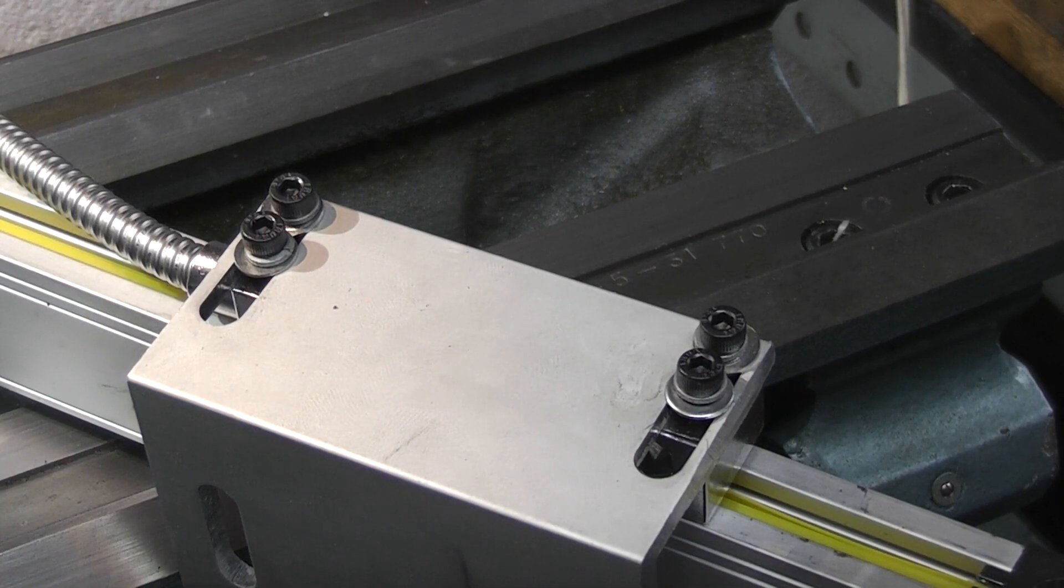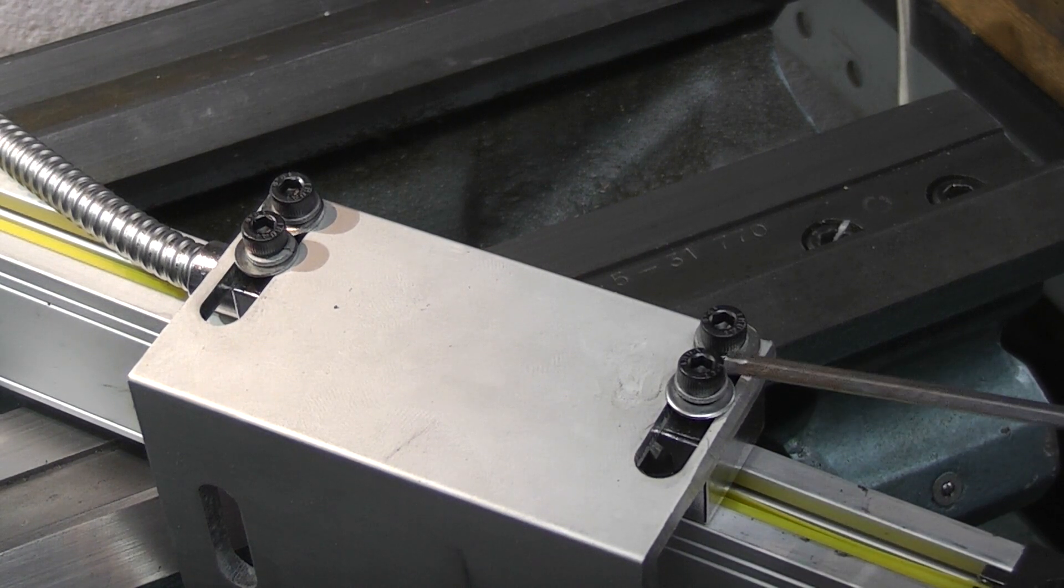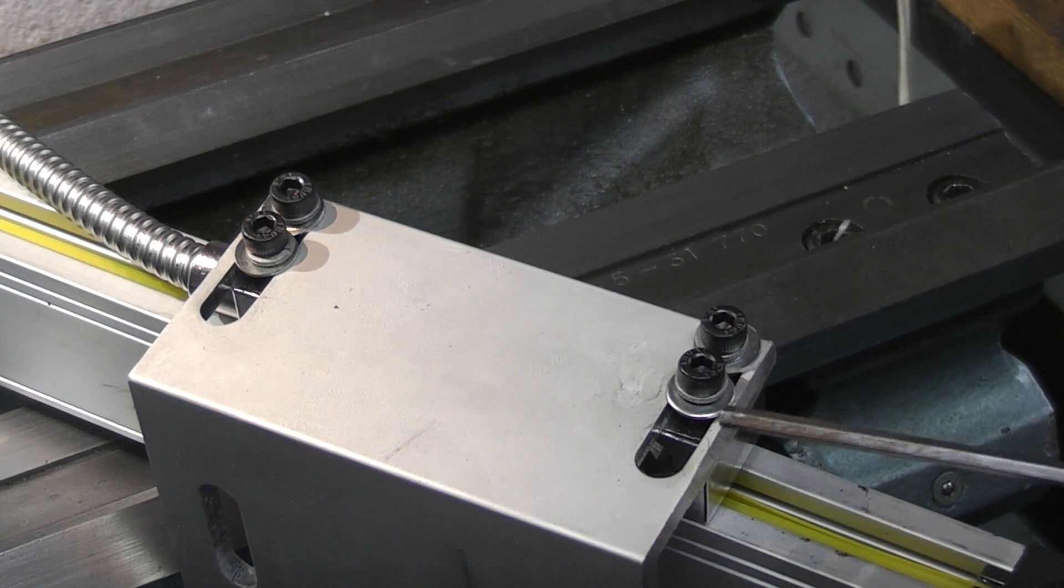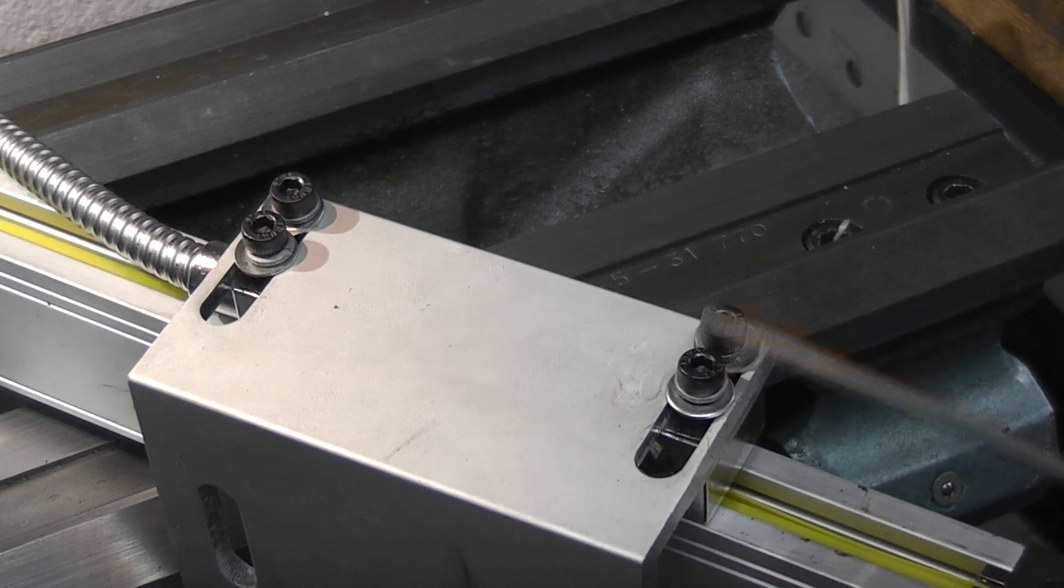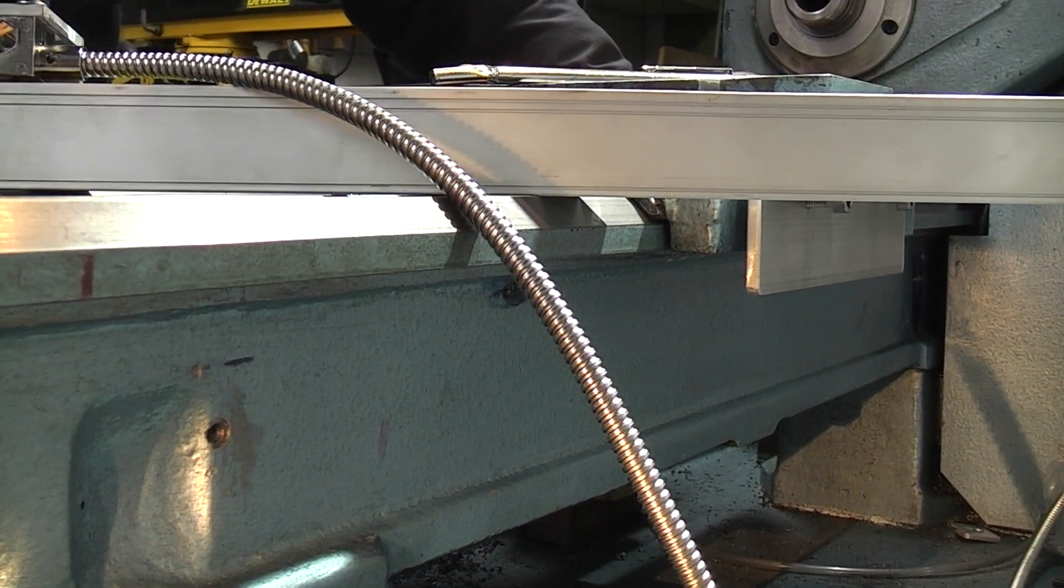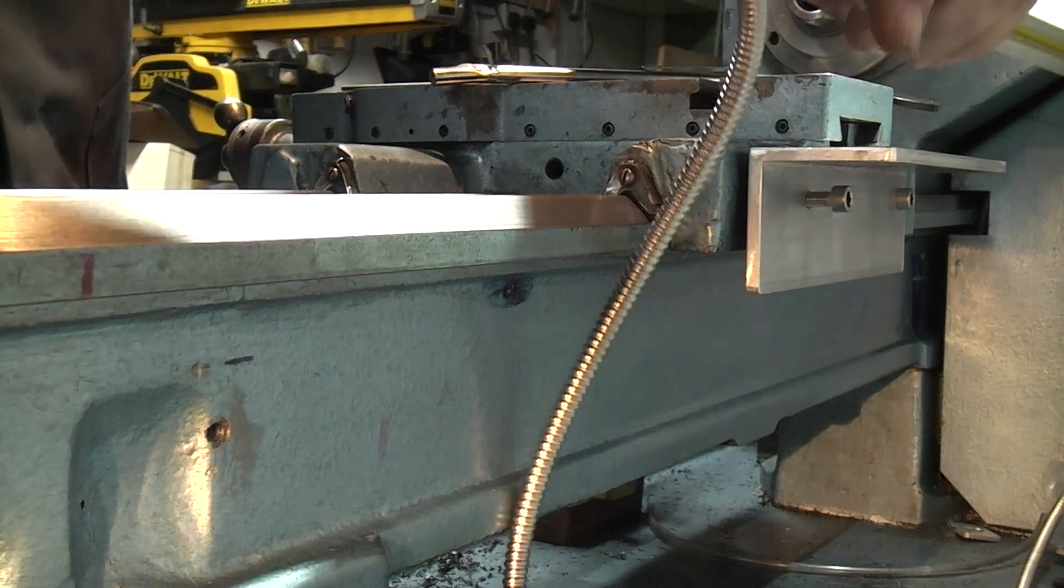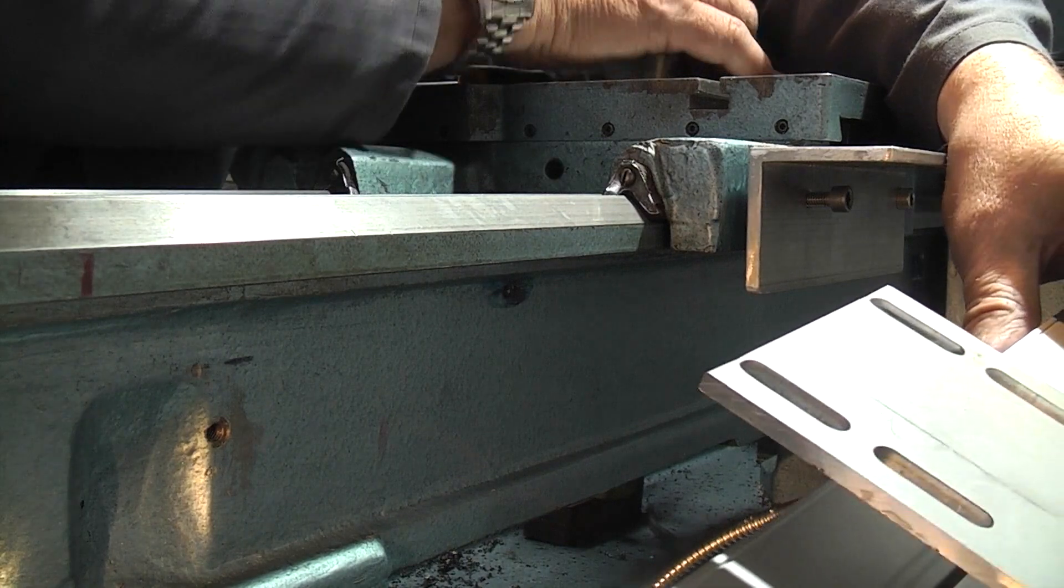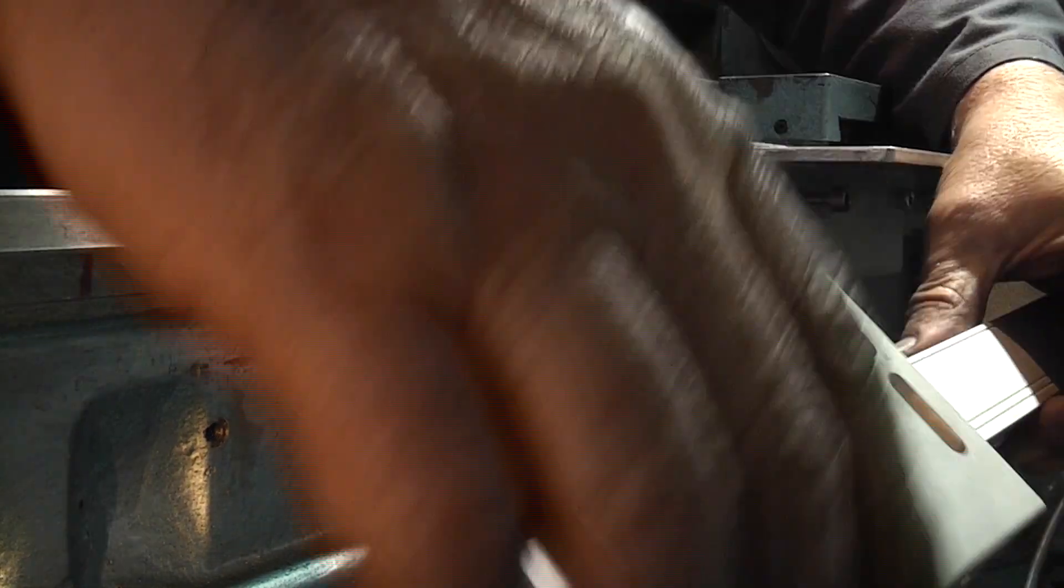Now I've fitted the bracket onto the sensor and I've used the four cap heads that come with the kit and the four washers. Well I've added four spring washers just in case these come loose over time. So now I'm ready to finally fit the scale on the back. I'm making sure that I've got this the way around I want with the cable coming towards the headstock.